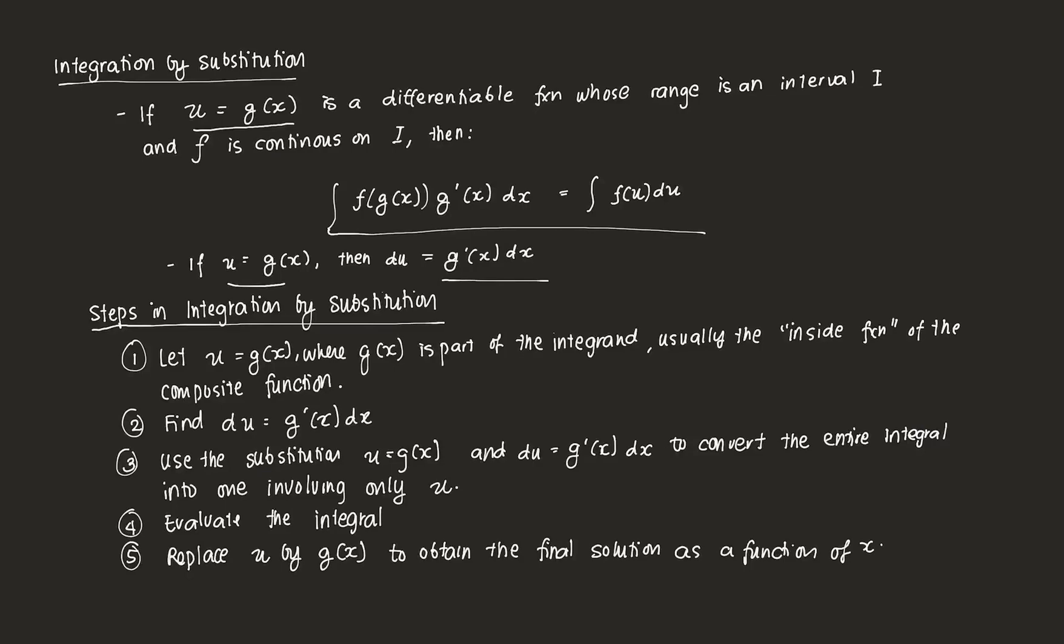How we integrate by substitution has five steps in general. The first is we let some element be u, which is equal to g(x), where g(x) is some part of the integrand, and is usually the inside function of the composite function that we have. We typically use this method when the function is more complicated than ones that can just be evaluated readily. After which, we find the derivative of that function and append dx.